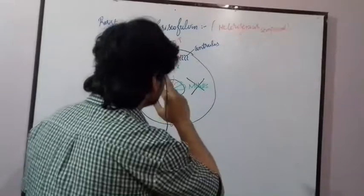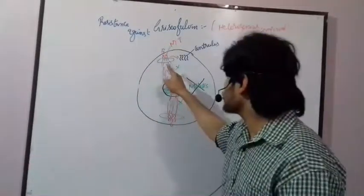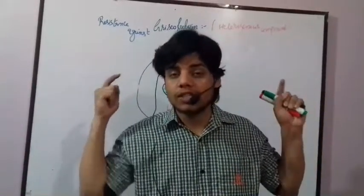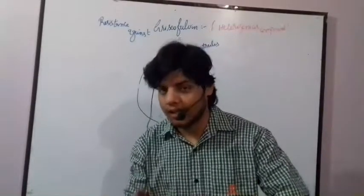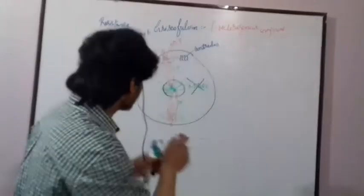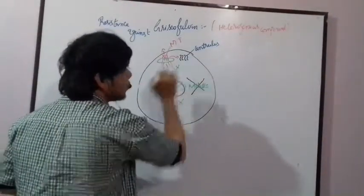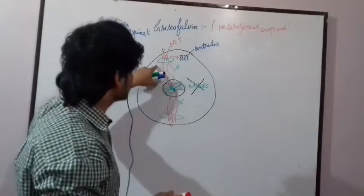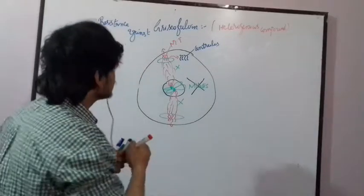Griseofulvin works when the microtubules are functioning — when the microtubules are producing the spindle fibers, then griseofulvin performs its mechanism of action. Sometimes, however, the microtubules will produce centrioles instead, and once they produce centrioles, griseofulvin will not be effective. This is the first resistance.